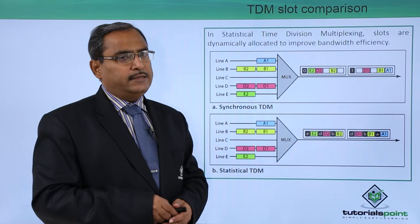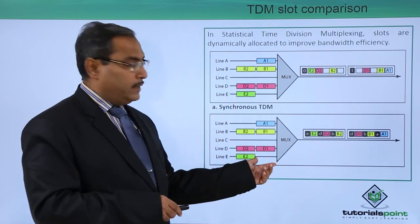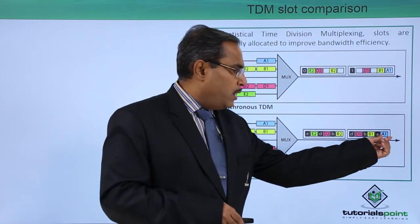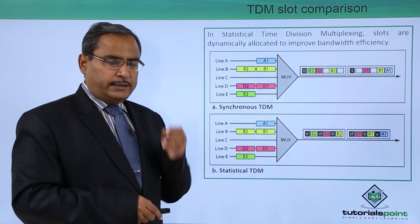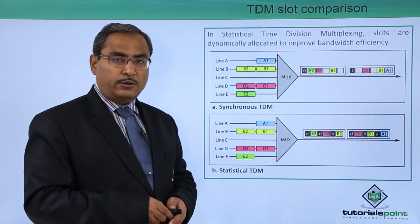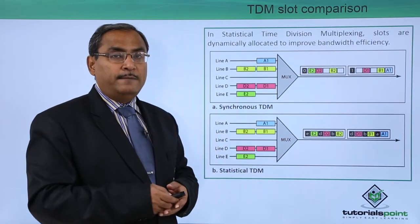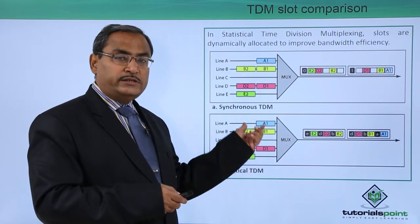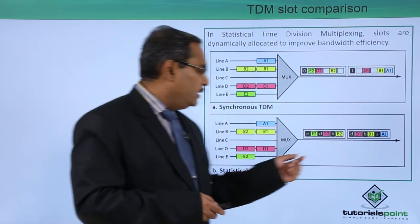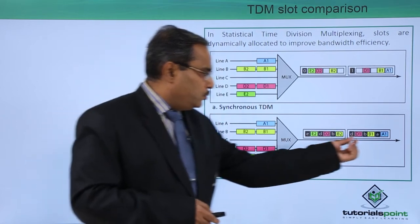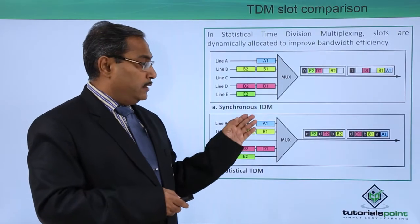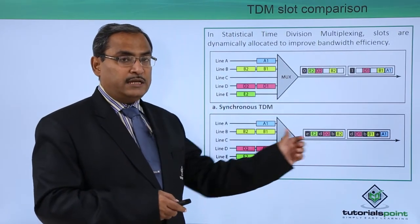Now we are going for statistical time division multiplexing. Here, since C and E are not transmitting, time slots will only be allocated for A1, B1, and D1 — only those that are transmitting. For C and E, no time slot has been allocated. But how can you identify which channel or which line of data is now being passed? We put a header there — A, B, and D — to indicate which respective line's data is being transmitted through the media.